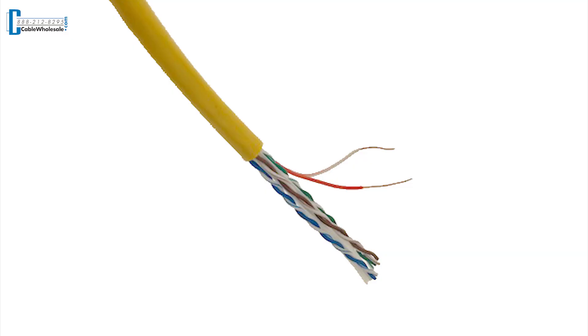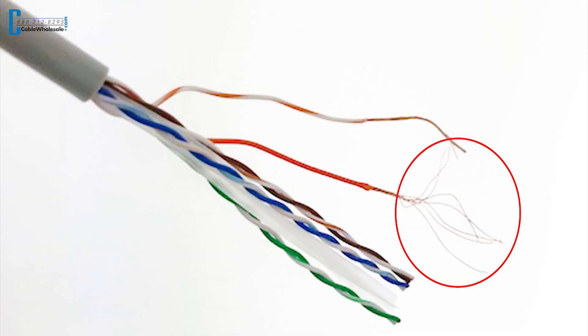The answer to the first part of the question can be explained by taking a look at the cross-section of the cable. In a solid cable, each of the eight conductors is made up of a single piece of solid copper wire. In a stranded cable, each of the conductors is made up of thinner wires of solid copper.